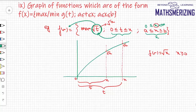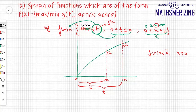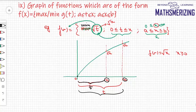Now what if I change the question — instead of maximum of √t, I take the minimum of √t? I again choose any point x. When t lies between 0 and x, the minimum value of √t is 0. Choosing another point x, again in that interval the minimum value of √t is 0. So the minimum value of √t in any such interval will always be 0.